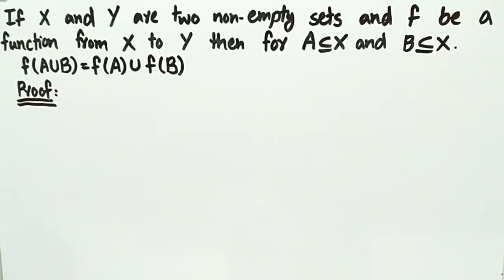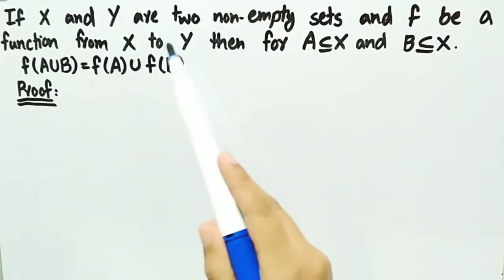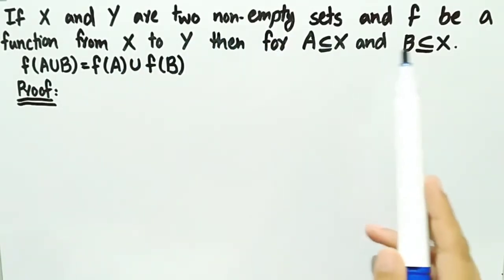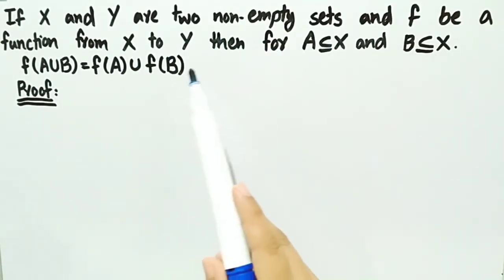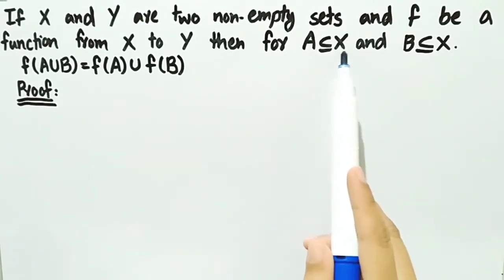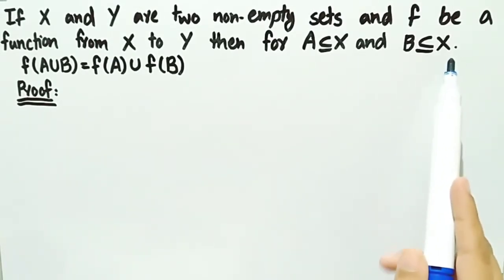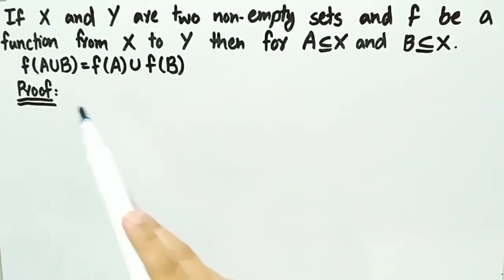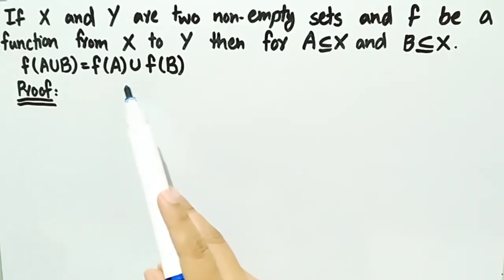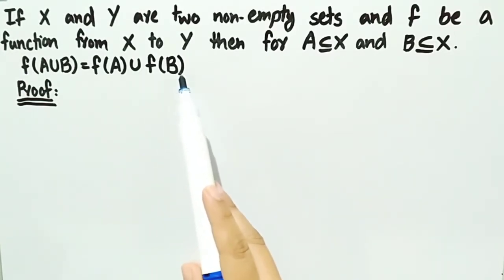In this video, we will prove this important result: if x and y are two non-empty sets and f is a function from x to y, then for a which is a subset of x and b which is also a subset of x, f operating on a union b is equal to f operating on a union f operating on b.